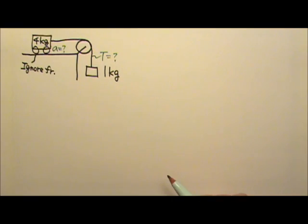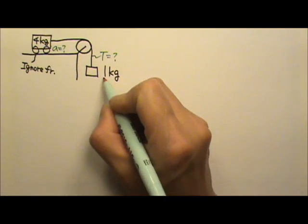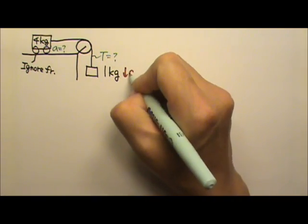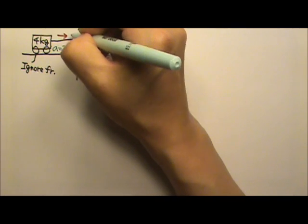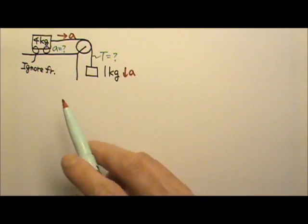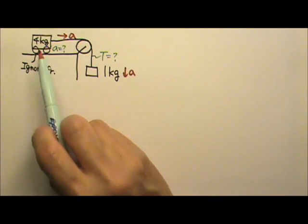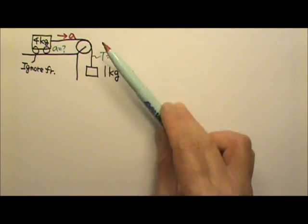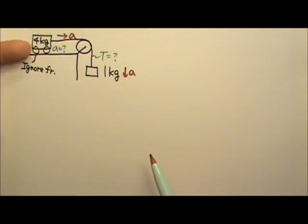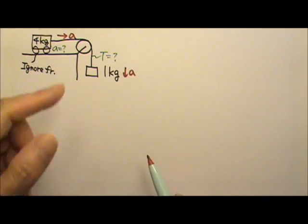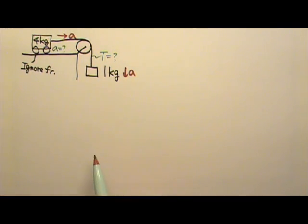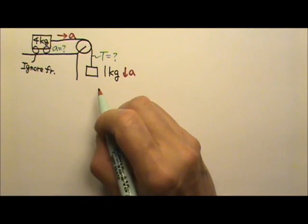So let's start with the direction of acceleration. This one will go down, that one accelerates to the right. Even though that box is heavier, the system's never going to go that way. It's because this heavy cart is being held by the table, so the weight gets cancelled by the normal force. You will see that after we draw the force diagram.